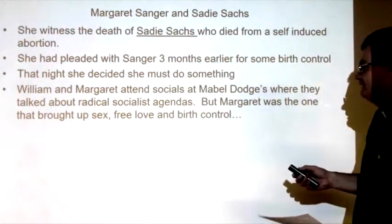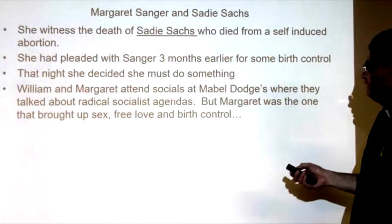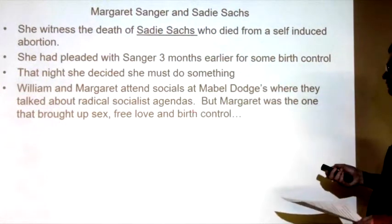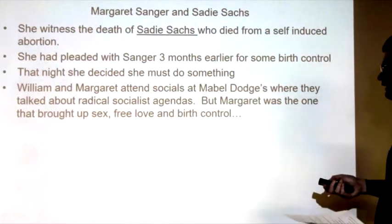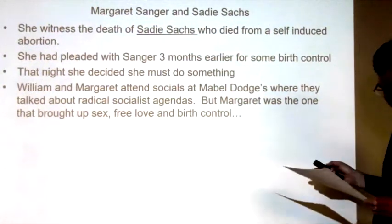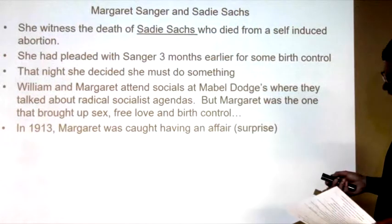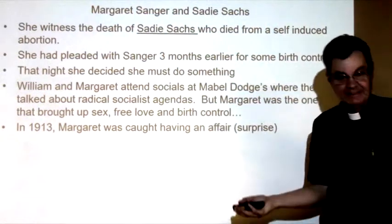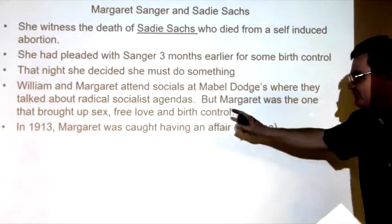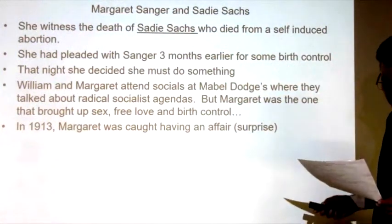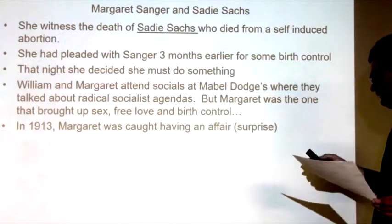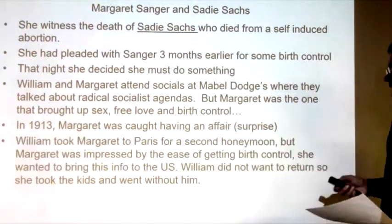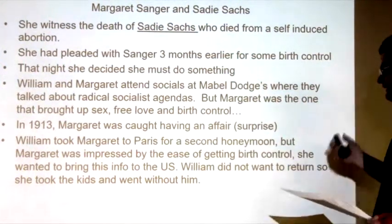She never considered just sitting down and talking with her — like, what's really wrong, why are you going out with all these guys? That might have made some sense, but she didn't do that. William and Margaret attended socials at the Mabel Dodge where they talked about radical socialist agendas, but Margaret was the one who brought up sex, free love, and birth control.